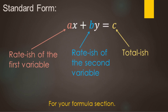Quick review — make sure this is in the formula section of your notebook. This is standard form: AX plus BY equals C. The value for A is the rate of the first variable; in the last example, that was the 2-point questions. B is the rate of the second variable, the 5-point questions from the last page. And then your total goes after the equal sign.